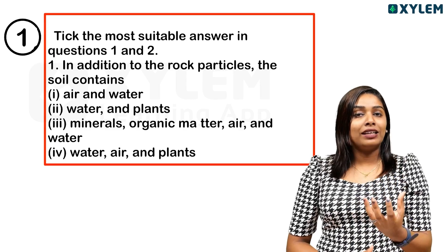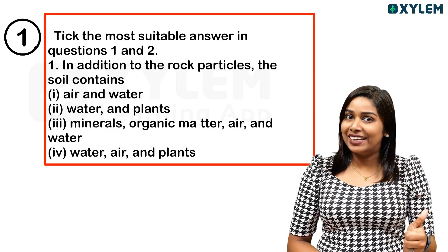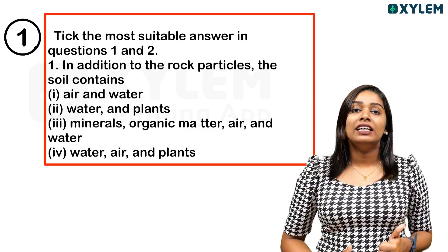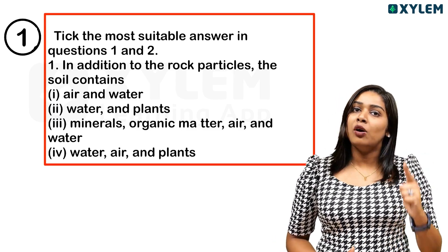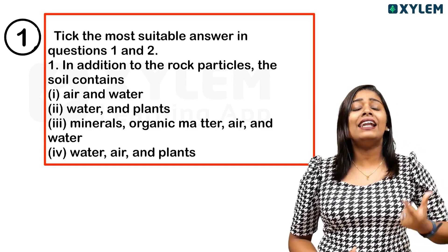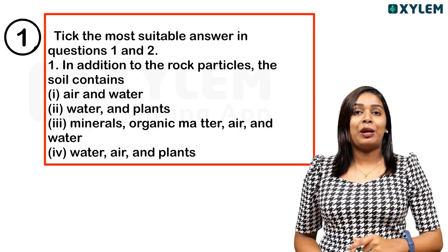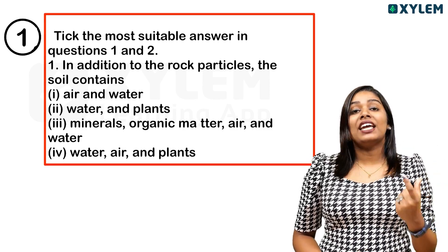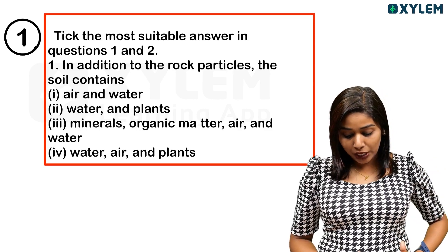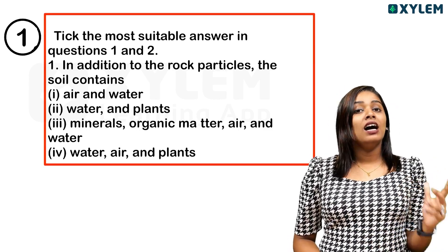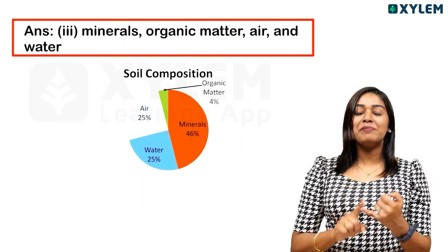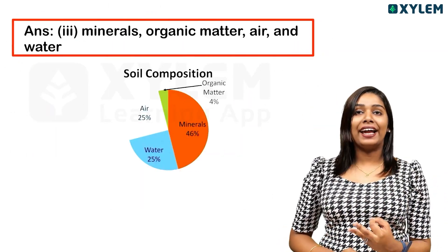What is soil called? It's a composition of minerals. It's not plants — plants are called organic matter. Air is also present, and they will also have water. The right answer is: Minerals, Organic Matter, Air and Water.